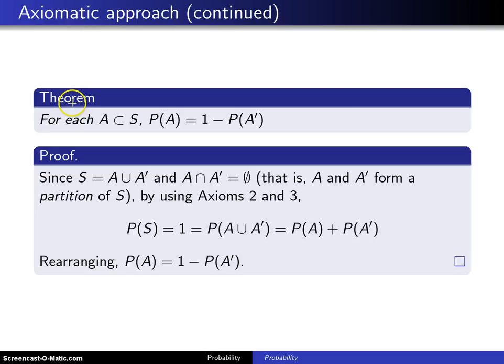So here is the first theorem, and it states the following. For each event A, which is a subset of the sample space S, the probability of A occurring is 1 minus the probability of A not occurring.